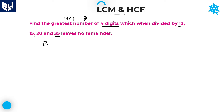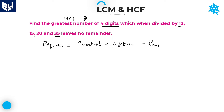Whenever the problem belongs to HCF third model, our required number becomes: greatest n-digit number minus remainder. You need to subtract the remainder from the greatest n-digit number. As we are talking about a four-digit number, it becomes four.